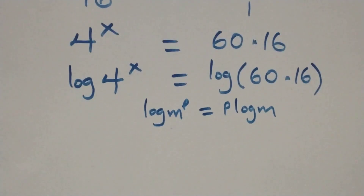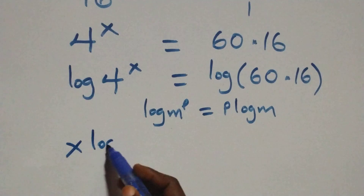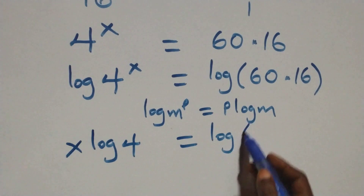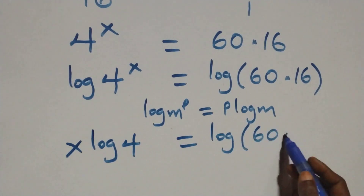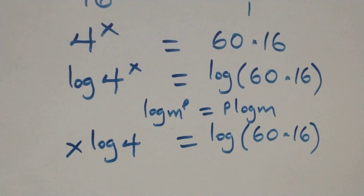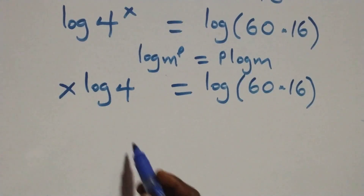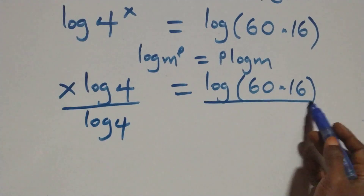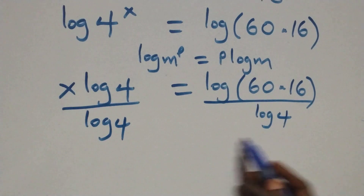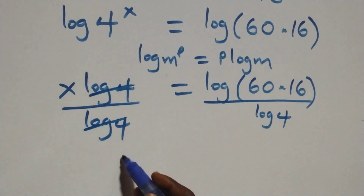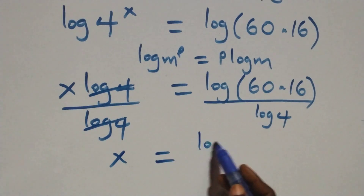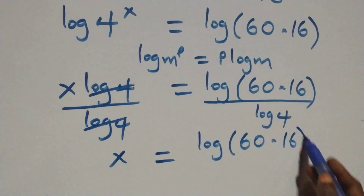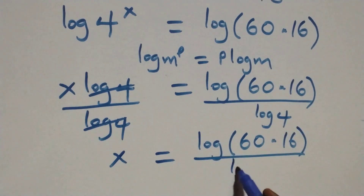Applying the power law, this becomes x times log four equals log of sixty times sixteen. The next step, we divide both sides by log four. The log four terms cancel each other, and x now equals log of sixteen times sixteen over log four.